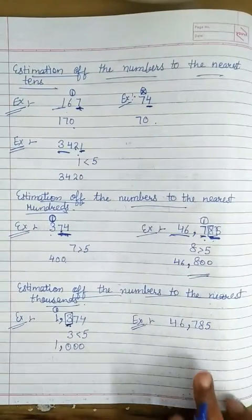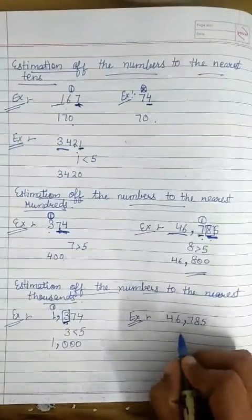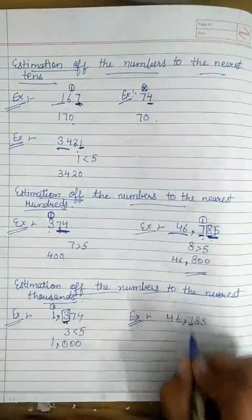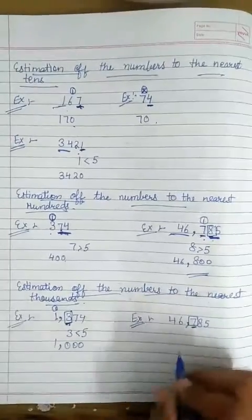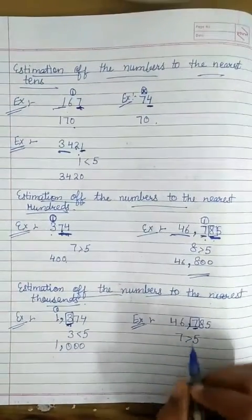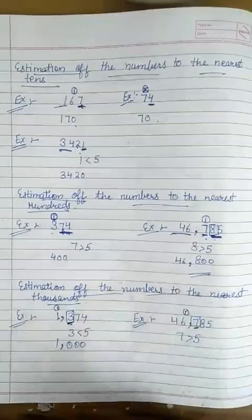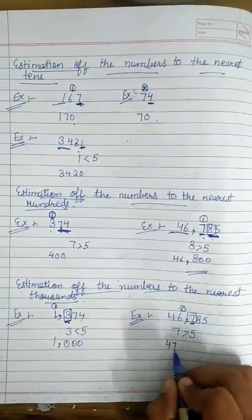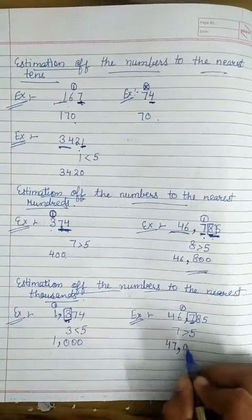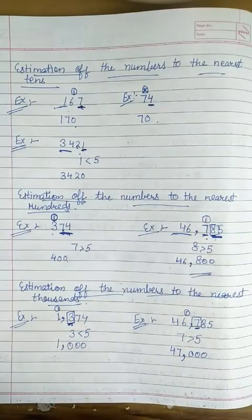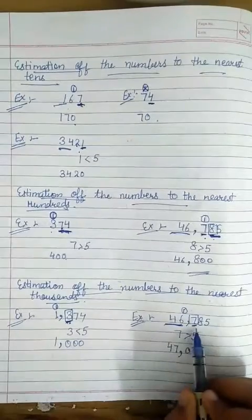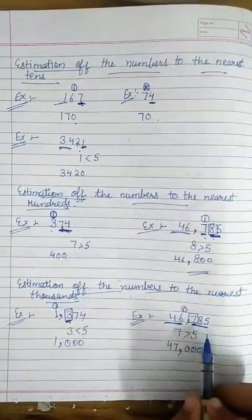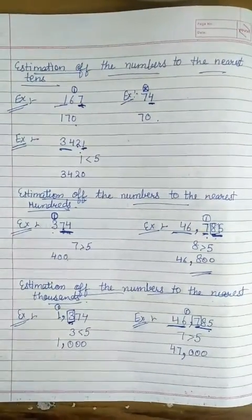Let us take another example: 46785. We have to estimate this number to the nearest thousands. First of all, check the digit at the hundreds place — here it is 7. Since 7 is greater than 5, we add 1 to 6. The answer becomes 47000. Remember that the higher digits remain the same and the rest are replaced by 0.